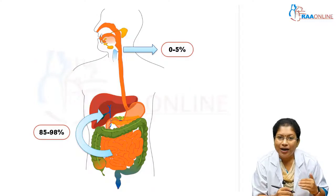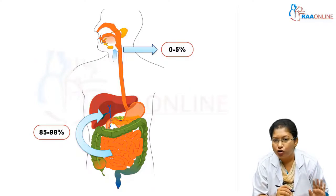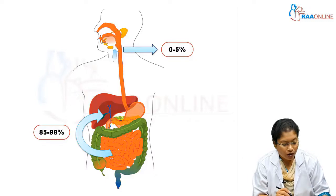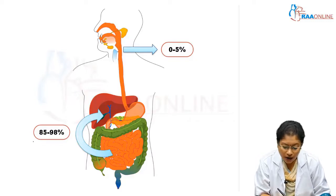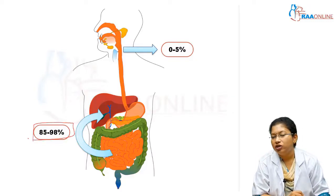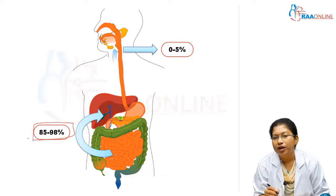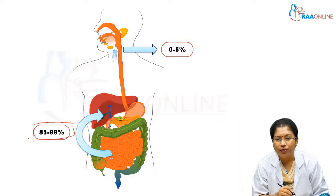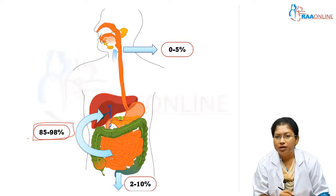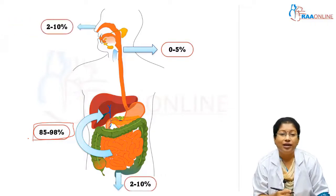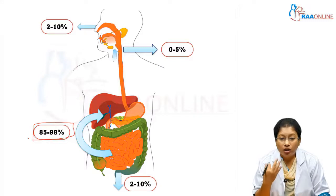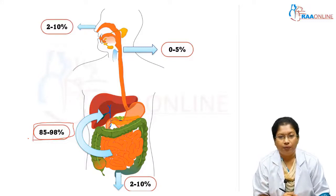Ethanol is completely oxidized in the liver and it is not stored. 85 to 98% is completely oxidized in the liver. 2 to 10% is excreted through breath, urine and sweat.